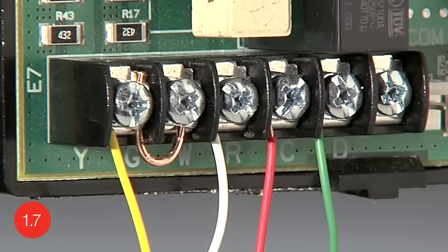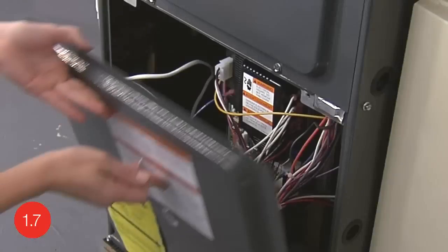Moving the G wire to the C terminal at both the thermostat base and the heating and cooling system terminal block provides the required power from your home to your thermostat. The jumper wire ensures your fan still runs while your system runs.